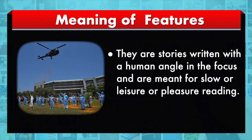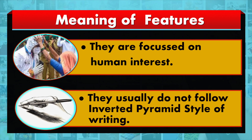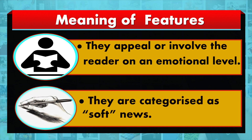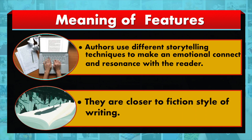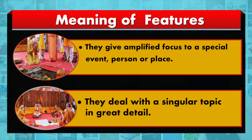They are stories written with a human angle in focus and are meant for slow, leisure, or pleasure reading. Some important features of a feature story are: they are focused on human interest; they usually do not follow the inverted pyramid style of writing; they appeal to and involve the reader on an emotional level; they are categorized as soft news; authors use different storytelling techniques to make an emotional connect and resonance with the reader; they are closer to fiction style of writing; and they give amplified focus to a special event, person, or place.